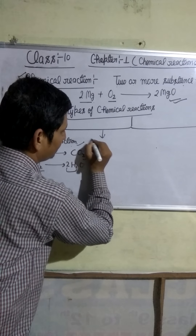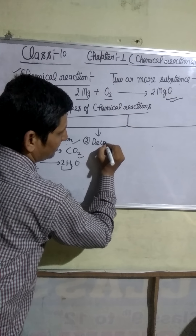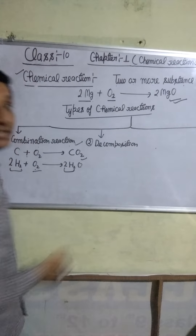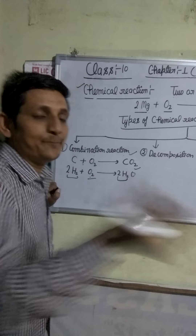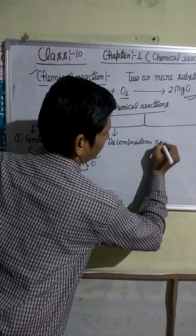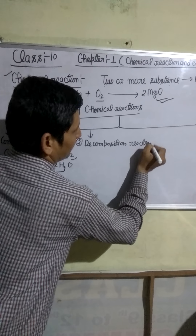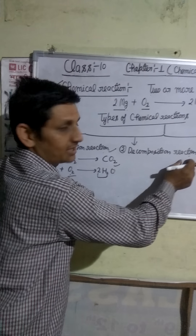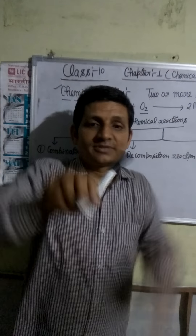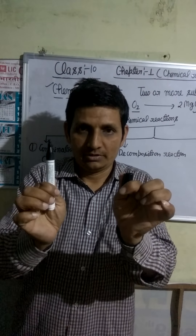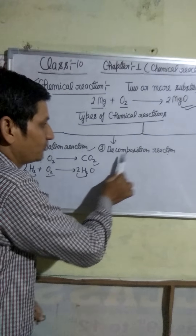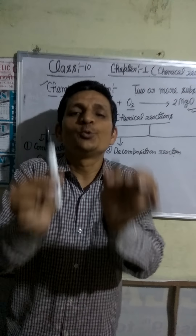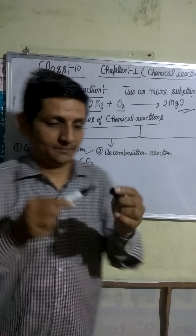Second is decomposition reaction. Decomposition reaction is just opposite of combination reaction. Those reactions in which a single substance breaks down into two or more simpler substances is called a decomposition reaction.